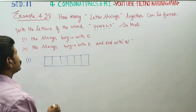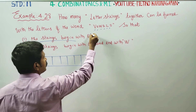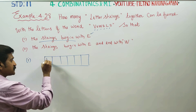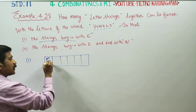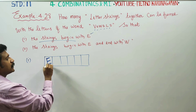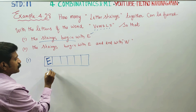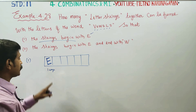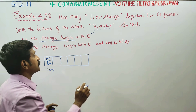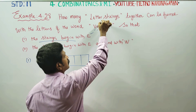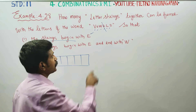First condition: all strings will start with E. E is fixed in the first block. Since E is already fixed in the first position, that accounts for one way.